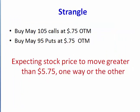So the rationale is that maybe you can buy — if the stock closed at, let's say, 100 — you buy the May 105 calls for 75 cents out of the money, and you buy the 95 puts at 75 cents out of the money. The expectation would be that this stock would have to move greater than the $5 price move away from 100, either one way or the other, plus the premium of the call. So the price movement you're expecting is going to be greater than $5.75 one way or the other.